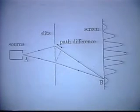If the path difference is a half-integral wavelength, one gets fully destructive interference, and you see a minimum on the screen, with partial interference in between.